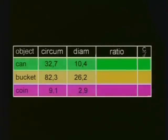The can has a circumference of 32.7 and a diameter of 10.4 cm. We can write this ratio as 32.7 to 10.4. We can divide C by D and we get an answer of 3.14.